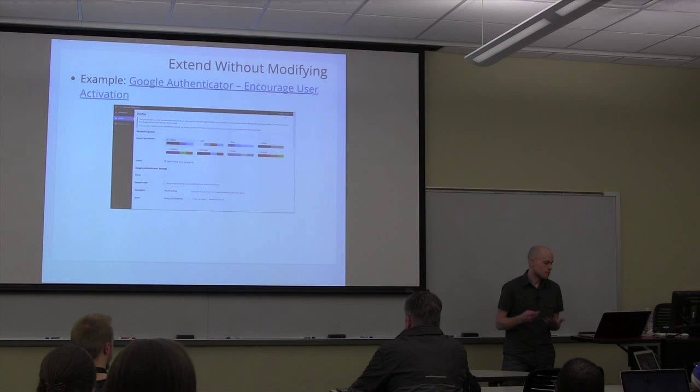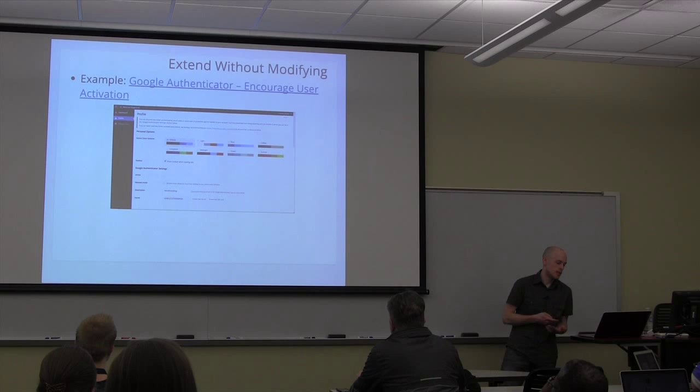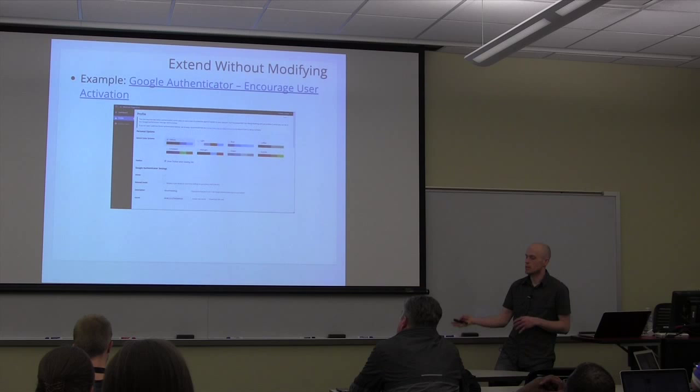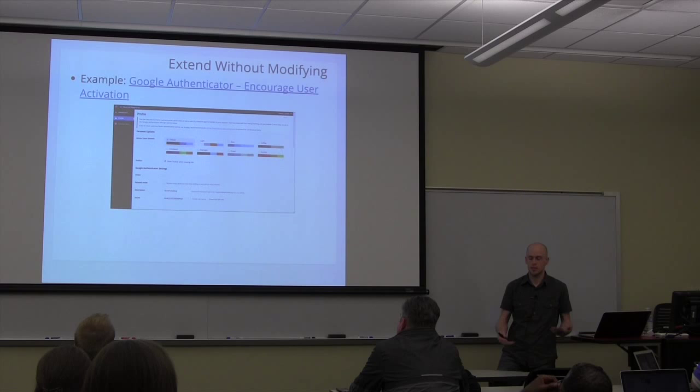So I created a second plugin that puts an admin notice on the user's profile if they haven't activated it, telling them it's available, what it is, and how to do it. The administrator can also force them to activate it — downgrading them to subscriber capability and redirecting them to their profile until they've activated it. This doesn't actually change anything the plugin itself does; it's just adding on to it.